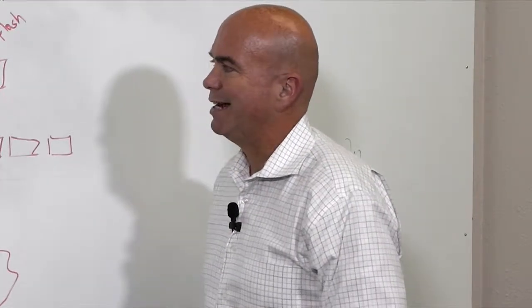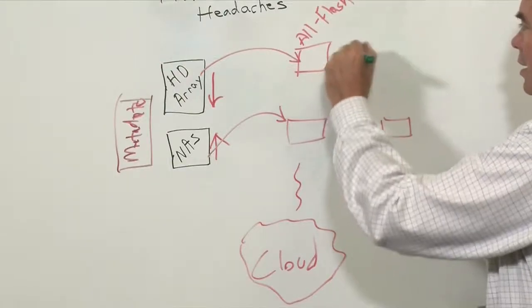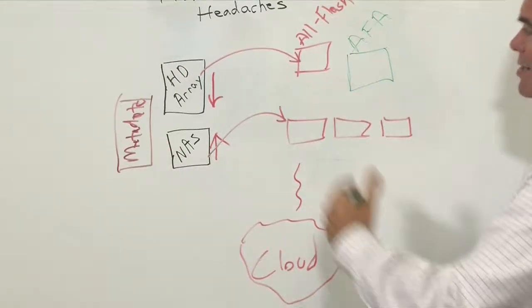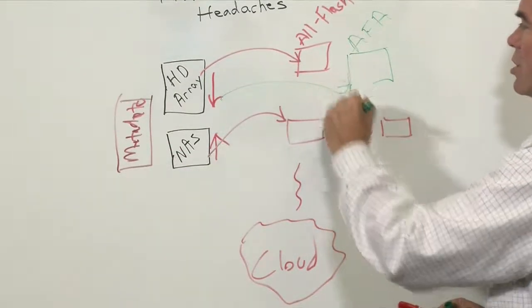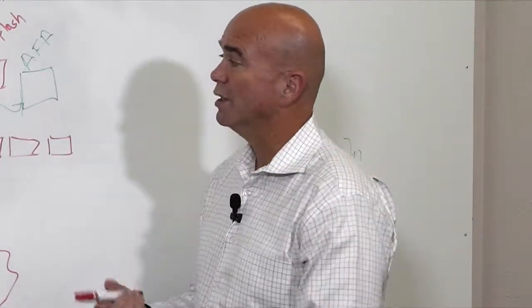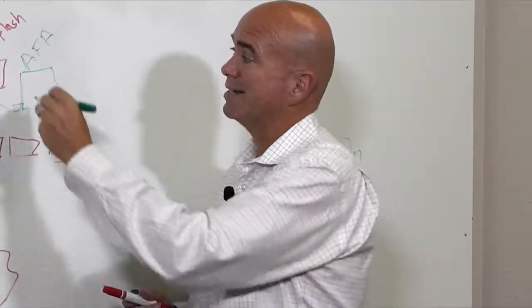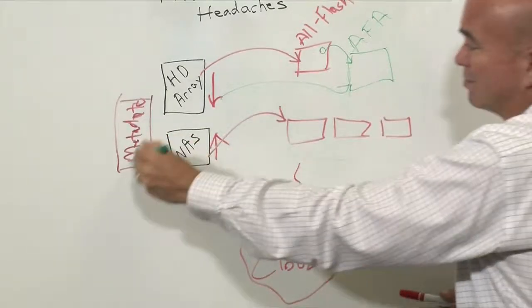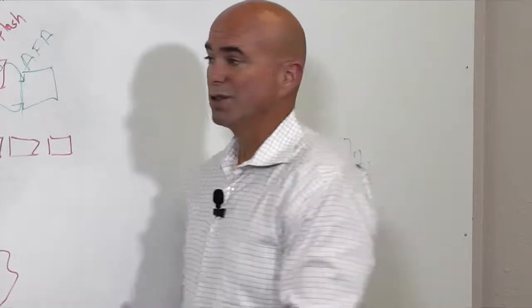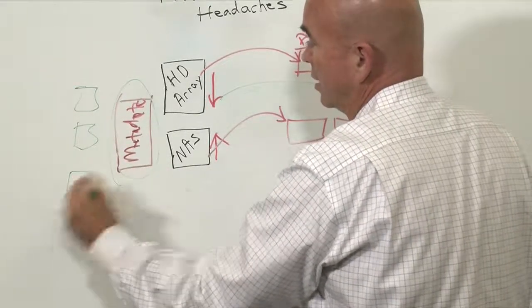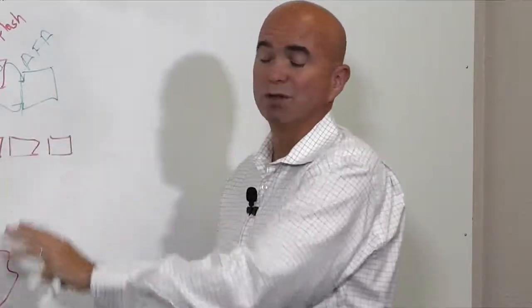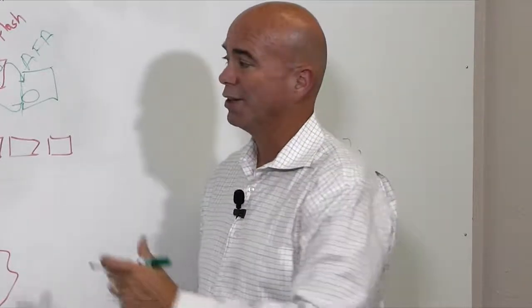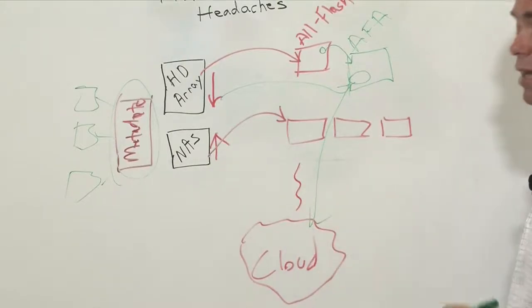So if you add another flash array, you can have a policy that says all net-new change data starts going there. You don't necessarily need to migrate it off the all-flash array, or if you do need to free up capacity, you can specifically pick some folders and move them over. The metadata engine updates all the servers so they don't have to be changed. And if you've got a project on that all-flash array that you're done with, you can move it to the cloud automatically.